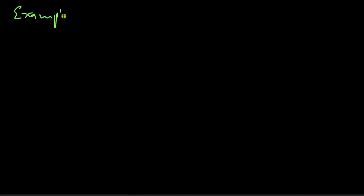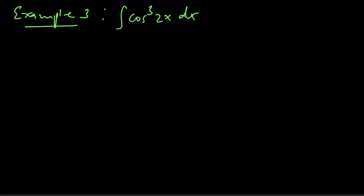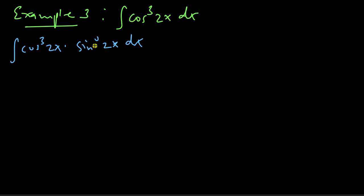Let's do the last example. For my third example, I'll take the integral of cos to power 3 of 2x dx. I'll write this as cos³(2x) times sin to power 0 of 2x dx, then I'm going to let u equal to this sin 2x term.